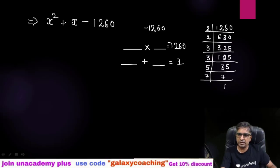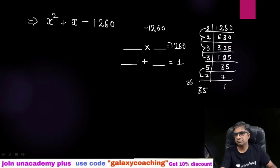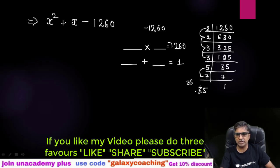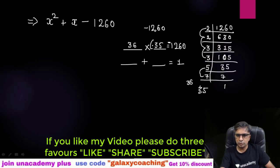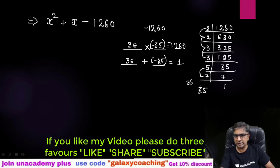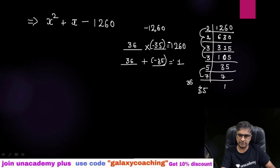Now arrange these factors so that multiplication becomes −1260 and addition becomes 1. Try: 4 × 9 = 36 and 5 × 7 = 35. So 36 − 35 = 1! We need 36 + (−35) = 1. Since 36 > 35, we keep the minus with 35. If the middle term were −1, we would keep minus with 36. So our two factors are +36 and −35.